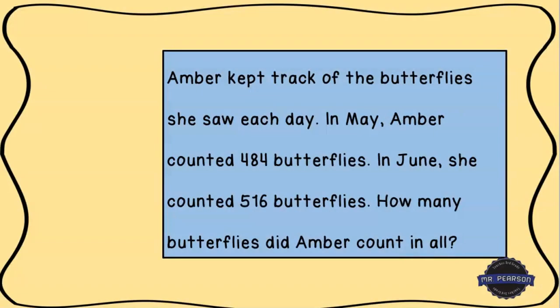Hey everyone, it's Mr. Pearson back with another word problem for us to work through and solve together. This one reads: Amber kept track of the butterflies she saw each day in May. Amber counted 484 butterflies in June; she counted 516 butterflies. How many butterflies did Amber count in all?